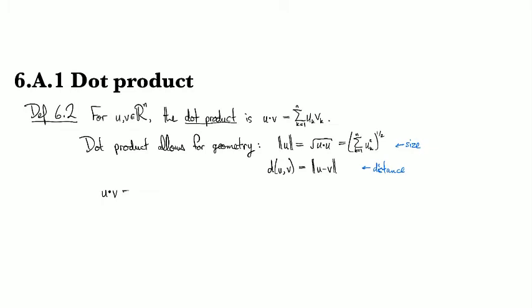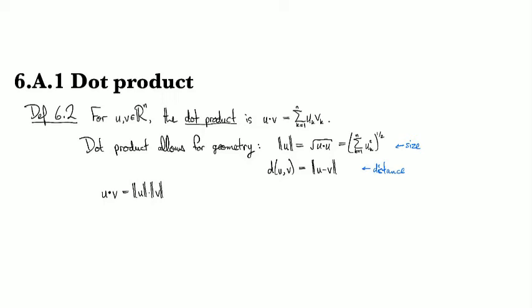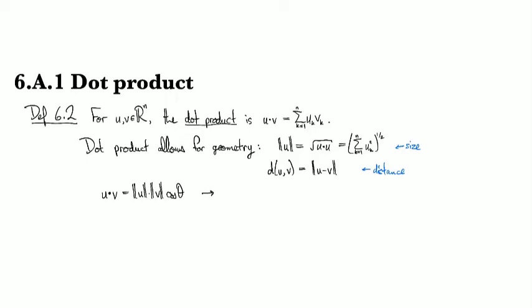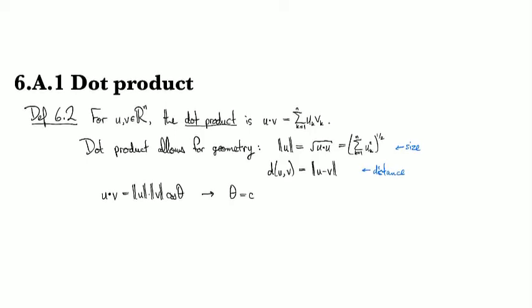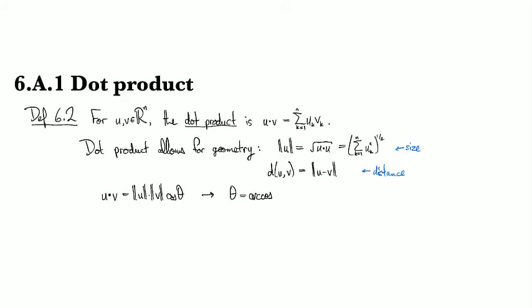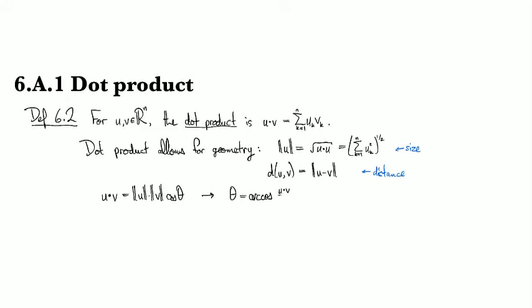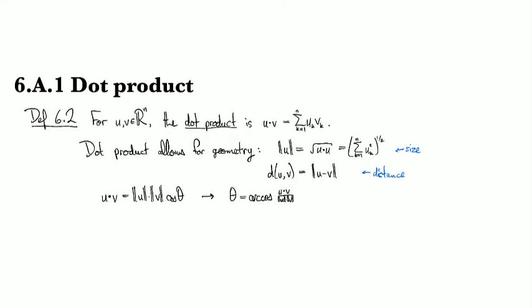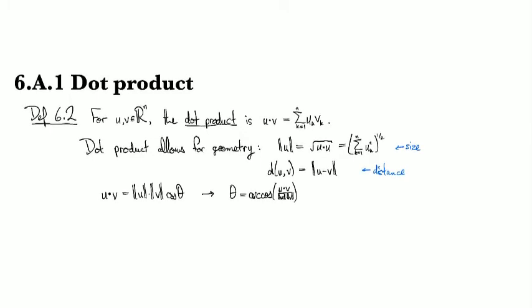The fact that the dot product of these things is the magnitude of one times the magnitude of the other times the cosine of the angle in between them. From that, you could actually see what the angle is for a pair of vectors. It's going to be the arc cosine of u dot v over magnitude u times magnitude v. Just solve that last equation for cosine. And so that gives us a notion of angle.